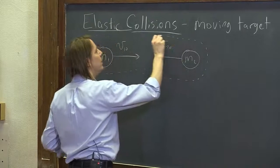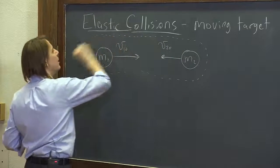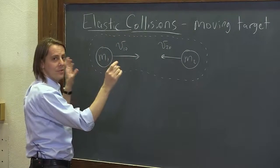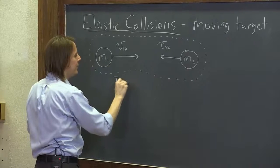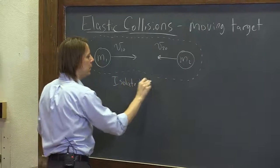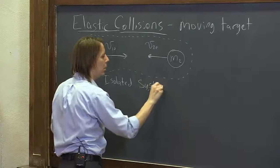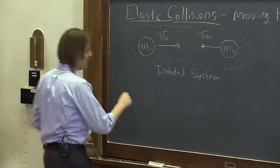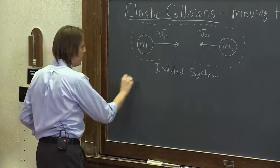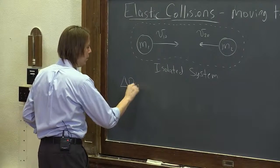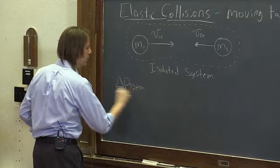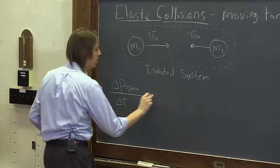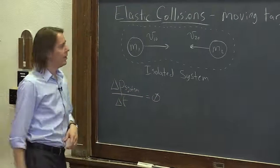So what we're going to do is we're going to think of these two masses that are colliding as an isolated system. And you remember what Newton's laws tell us when we have an isolated system is that the change in momentum of the entire system with time equals zero, right?